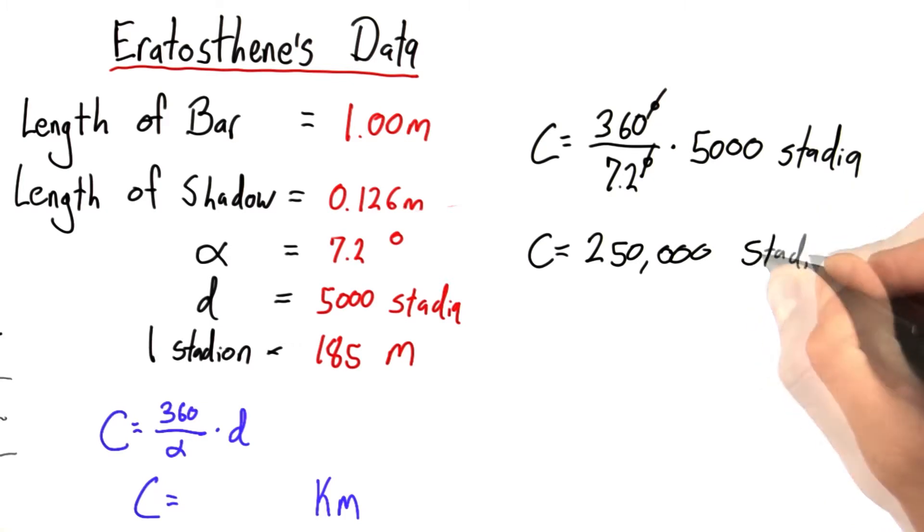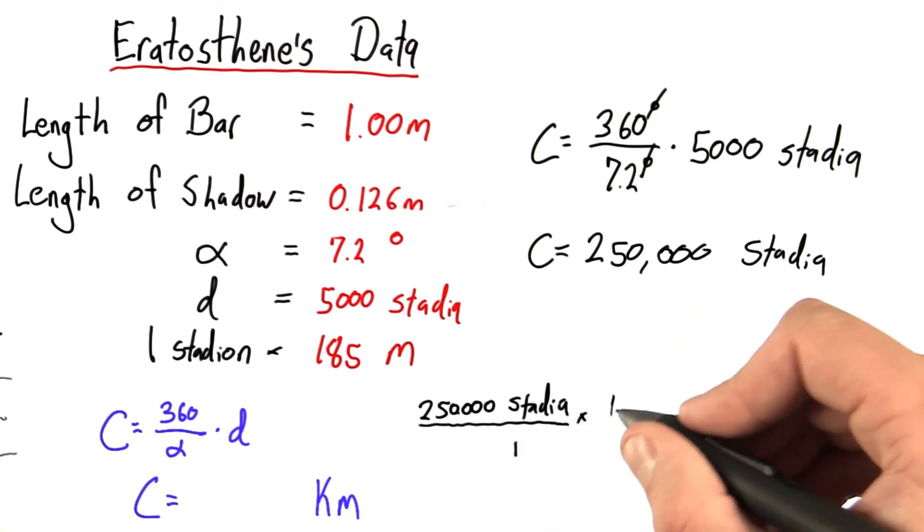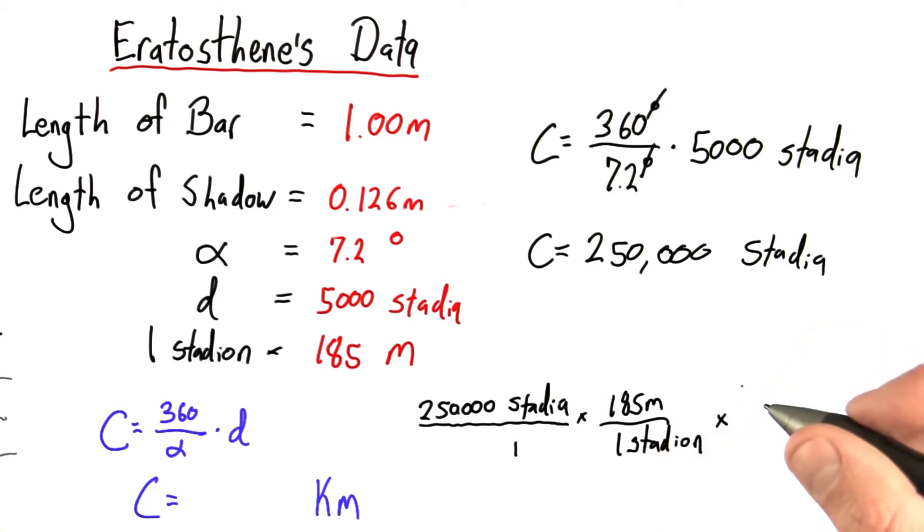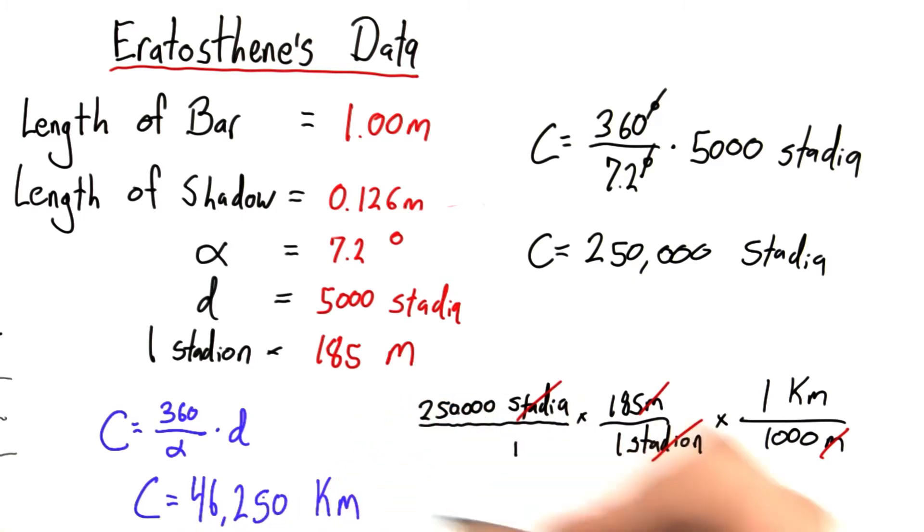Now, we're still not done because we need to convert. We're going to take our number, 250,000 stadia, times 185 meters in one stadium, and we want to convert that to kilometers. So we multiply by 1 kilometer for every 1,000 meters. When we do this, we get a final answer of 46,250 kilometers.